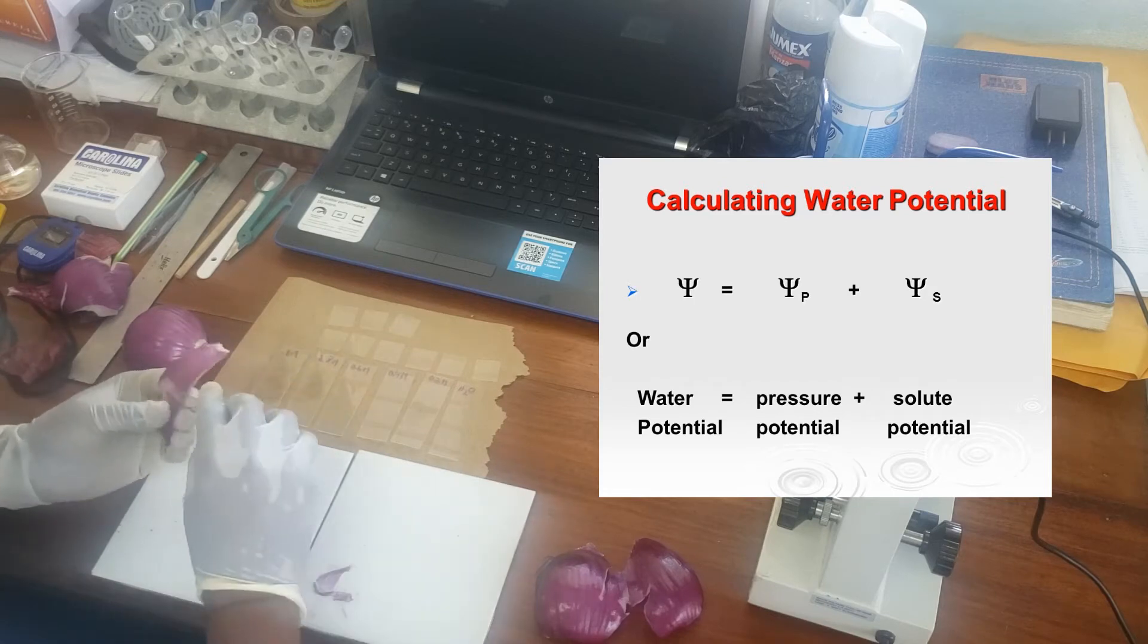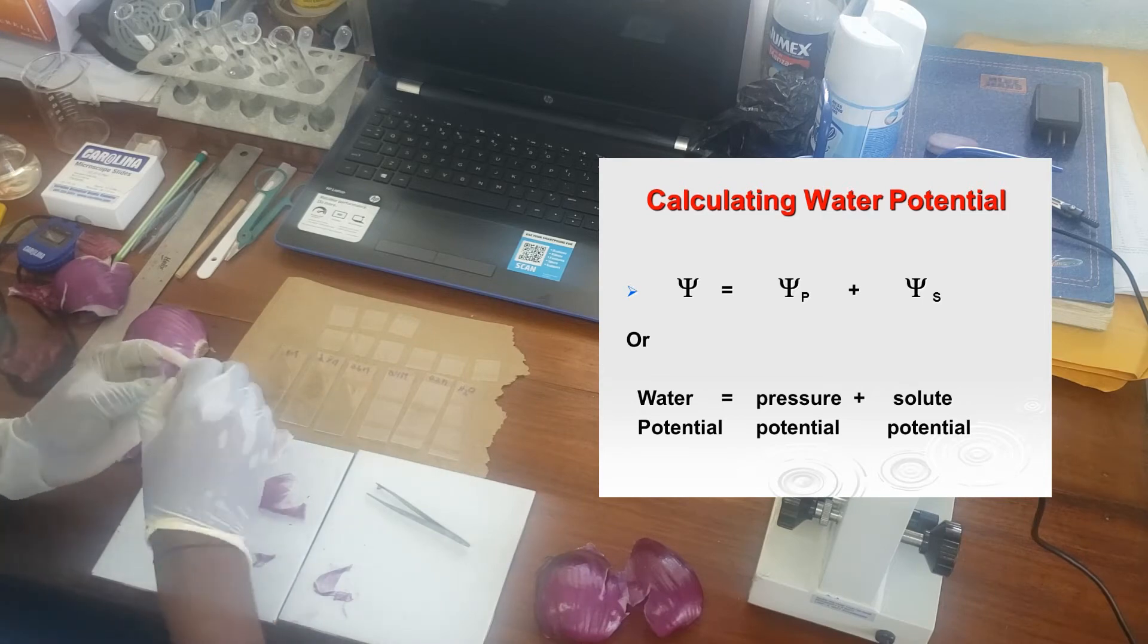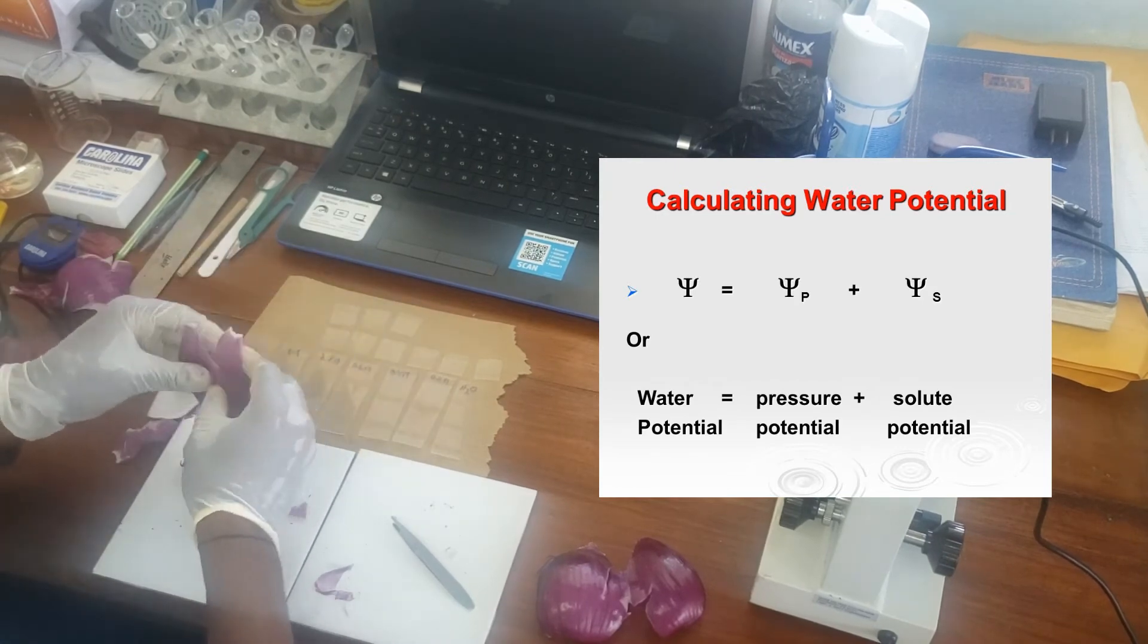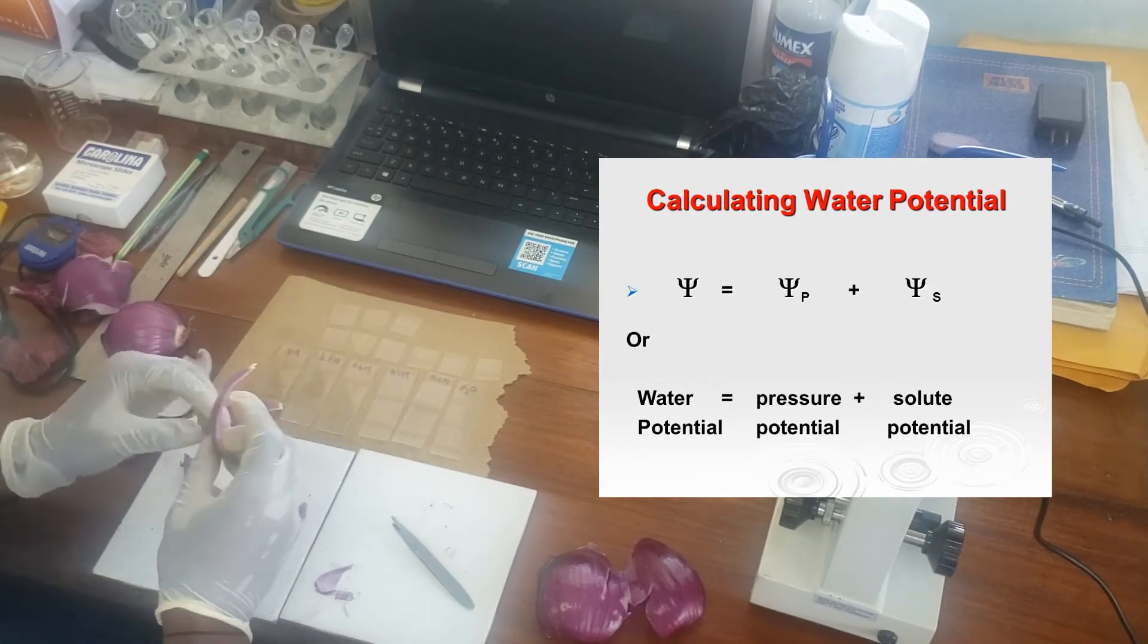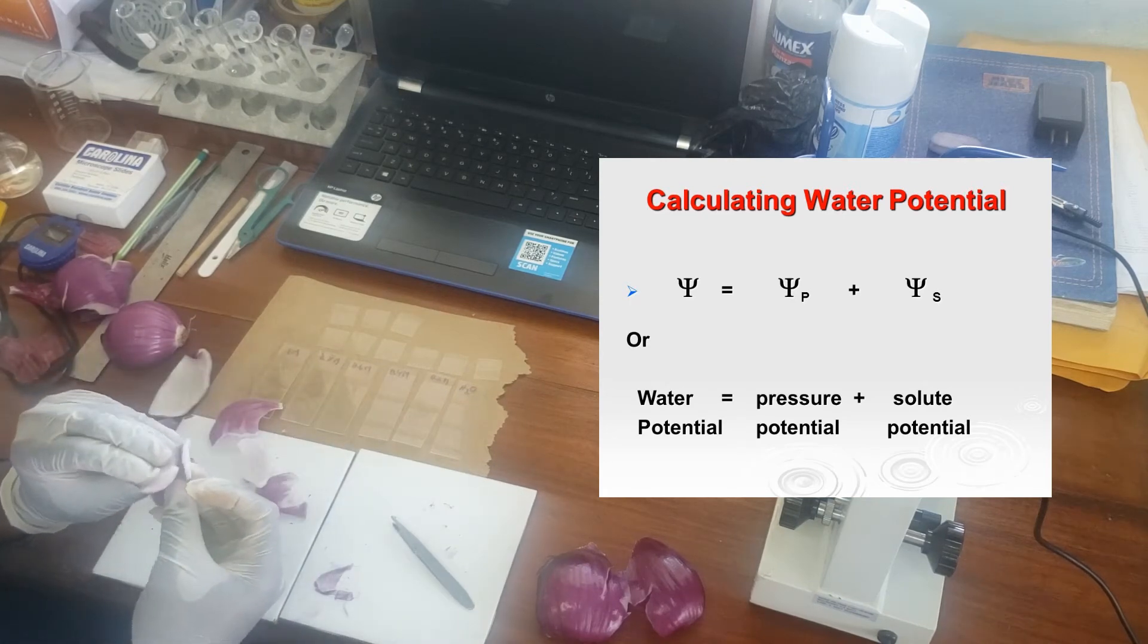Now when looking at the formula for calculating water potential, one of the first things we notice is the pressure potential which is affected by the cell wall. Basically the pressure potential is how much water the cell could hold depending on the cell wall. So it's basically limited by the cell wall.